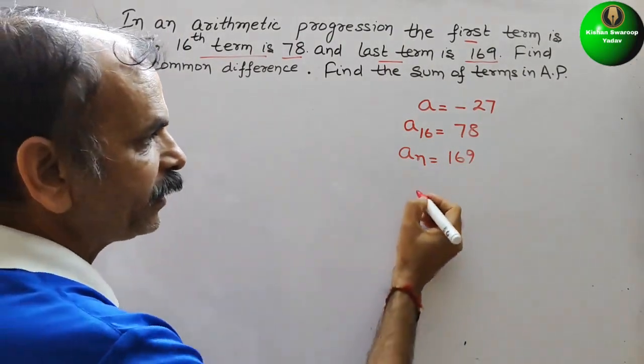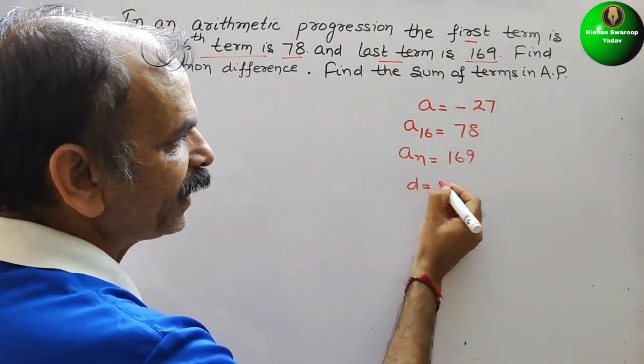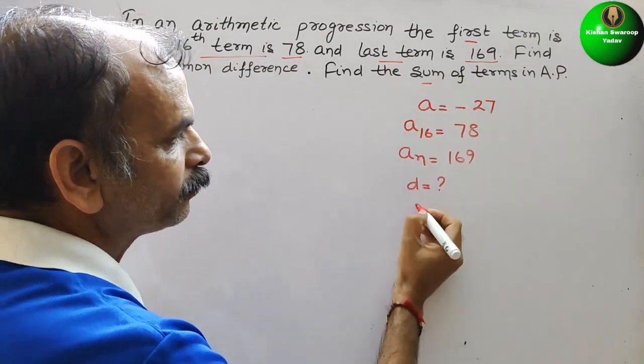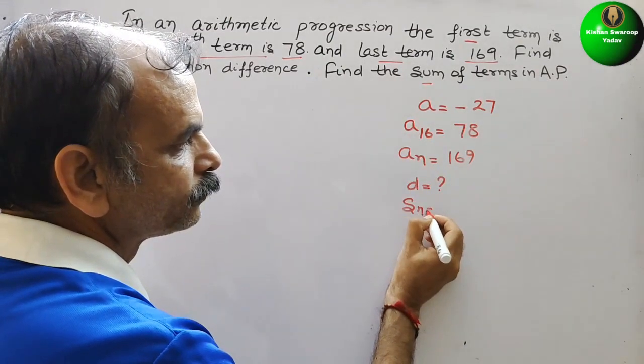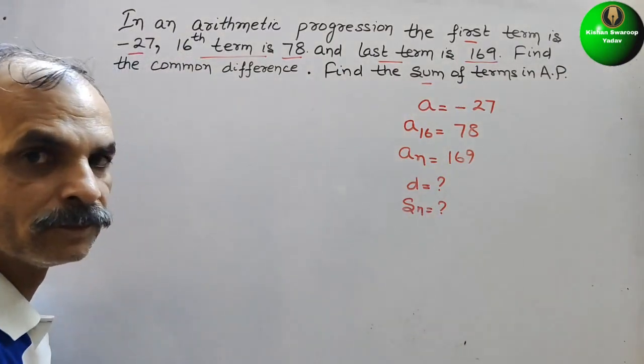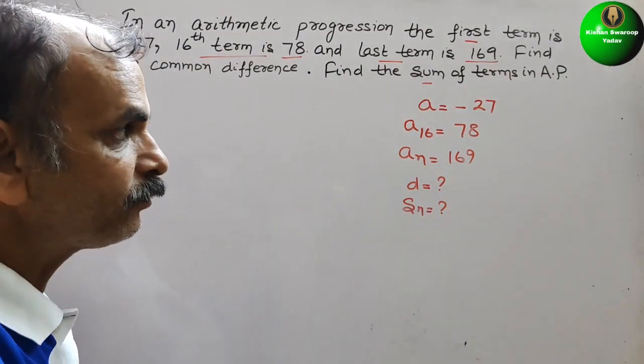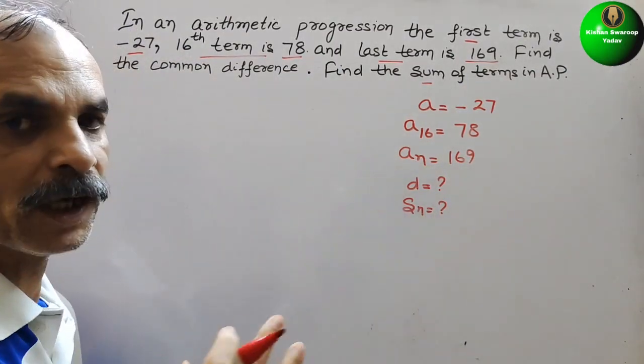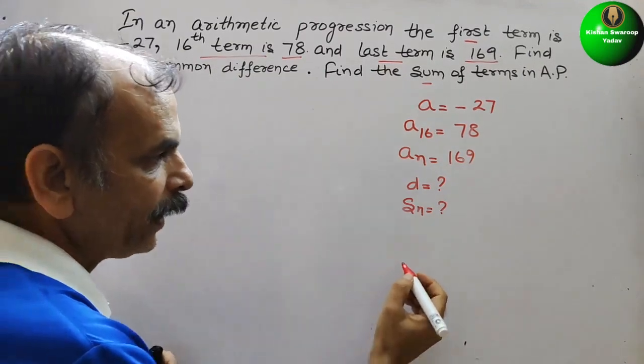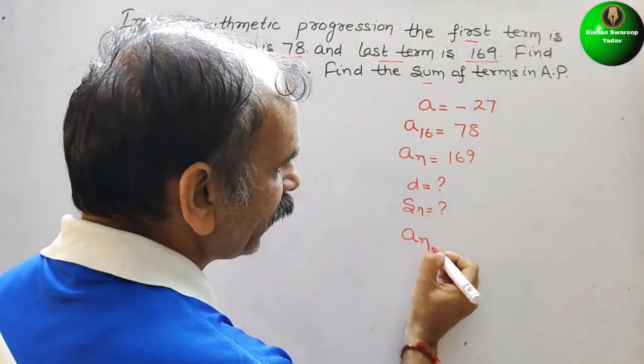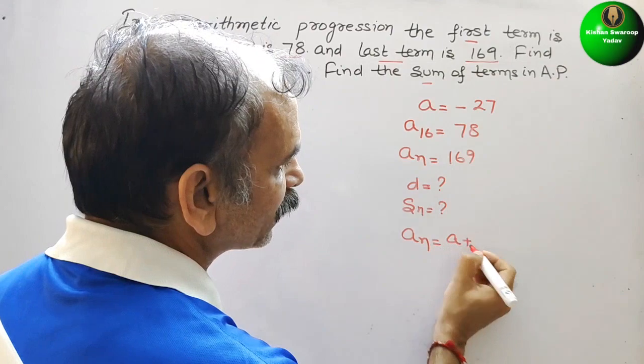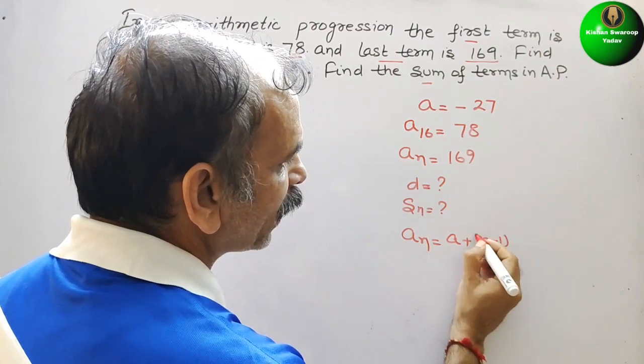Now we have to find out the common difference and the sum. So here, first we will write the AN formula. AN formula is nothing but AN equals A plus N minus 1 into D.